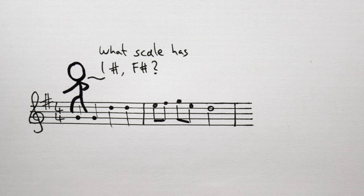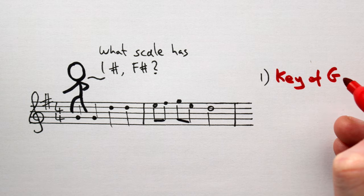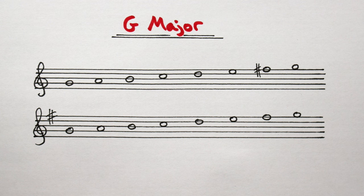Like before, find the scale and you find the key. In this case, we're in the key of G major. Because the scale of G major contains a single sharp. And that sharp is F sharp.